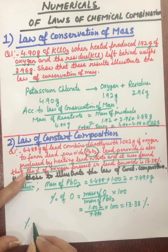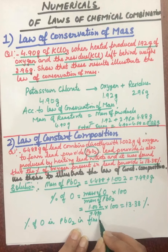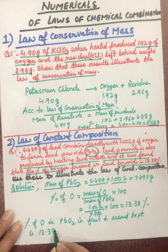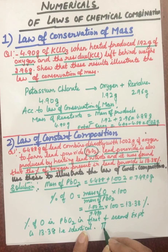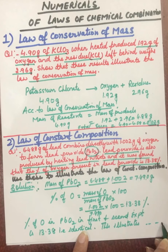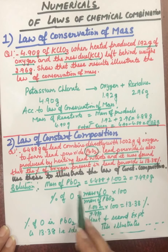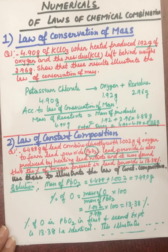Percentage of oxygen in PbO₂ in both the first and second experiment is 13.38 percent, which illustrates the law of constant composition. If the percentage of one element comes out to be the same, the percentage of the second element will also be the same, since it will be 100 minus the first percentage. This was the first numerical for the law of constant composition.